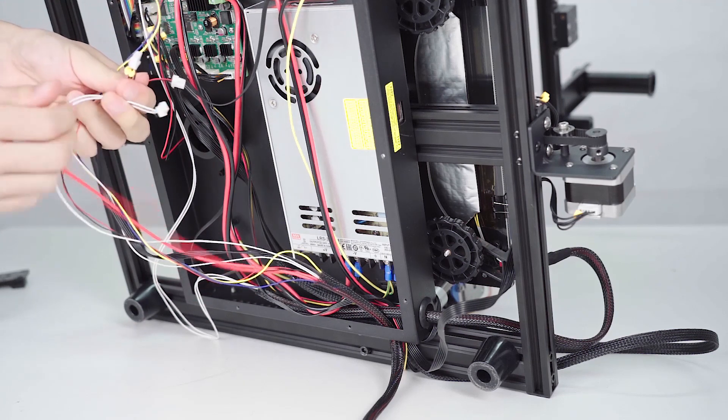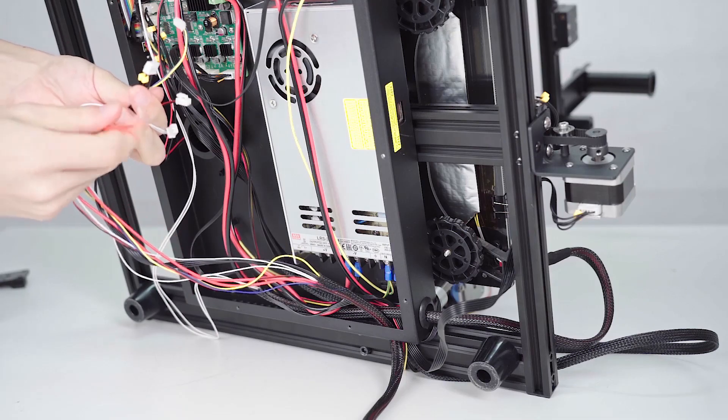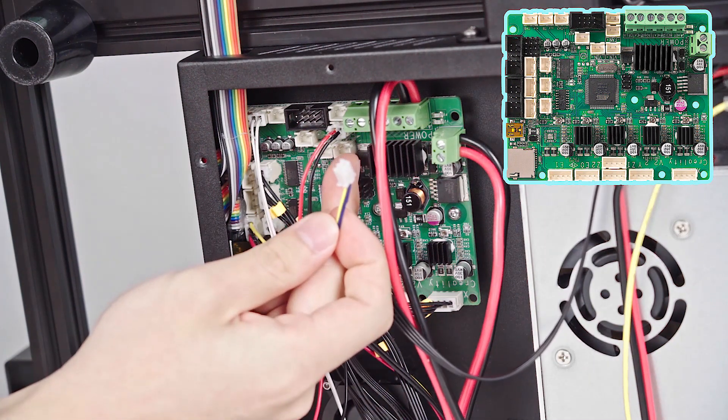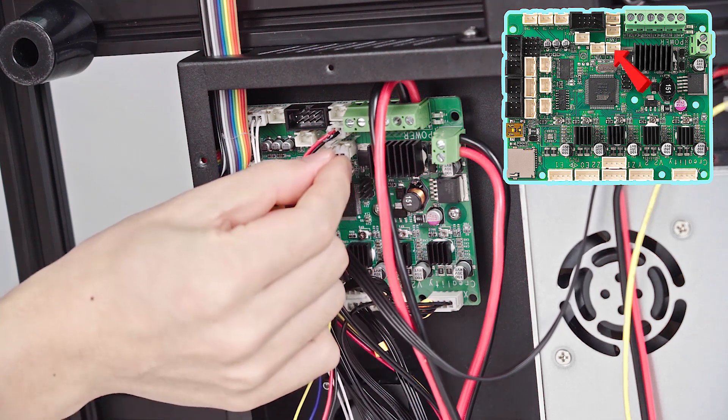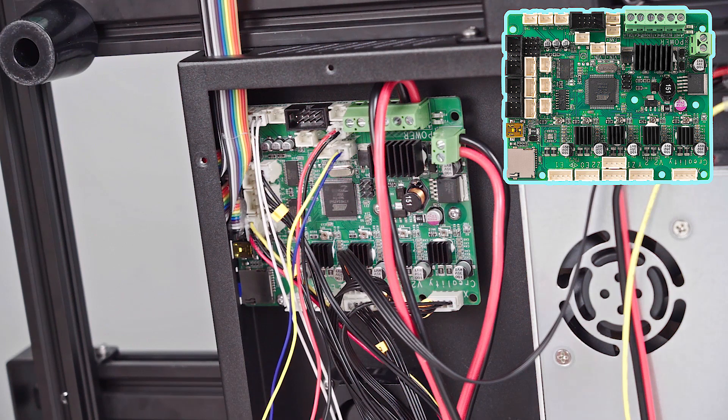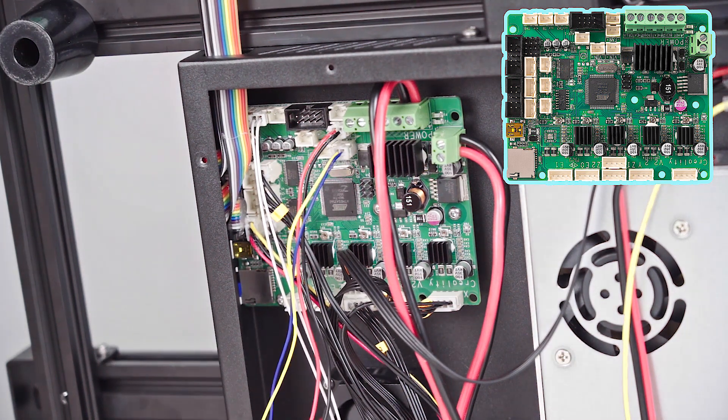Yes, we need to connect five different cables to the main board. First, we are going to connect it to the fan. The one holding in my partner's hand with the yellow and the blue one. Now, connect it to the control board fan.